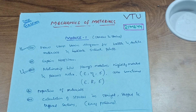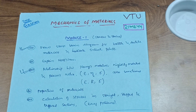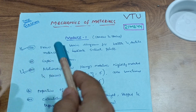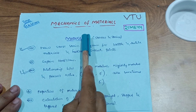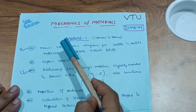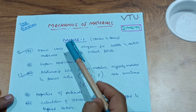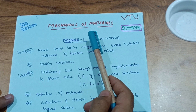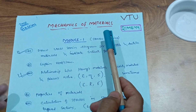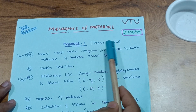Hello dear friends, welcome back to my channel. I am making videos on passing strategies for VTU students. Today I have another subject for 21 scheme students, especially for mechanical engineering students. This is Mechanics of Materials, also called MOM in short form, with subject code 21ME44. Let me tell you some important questions which you have to cover in this subject.